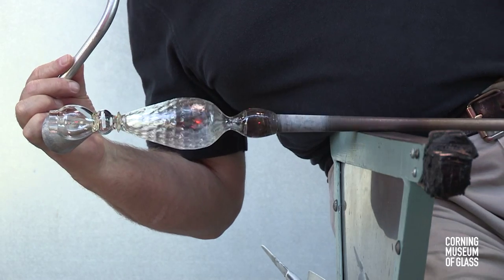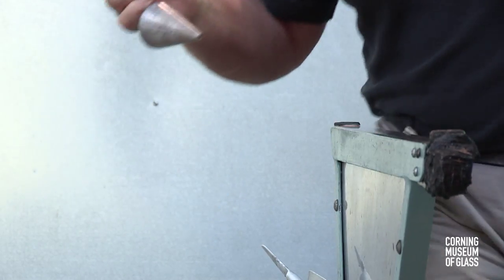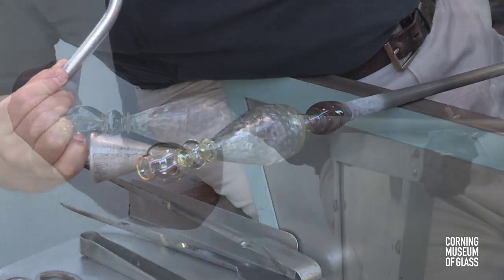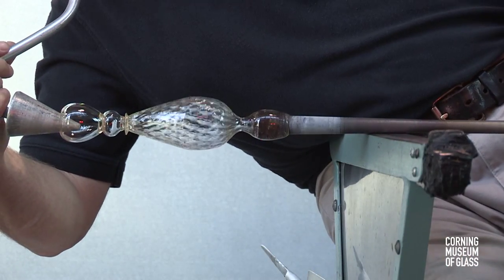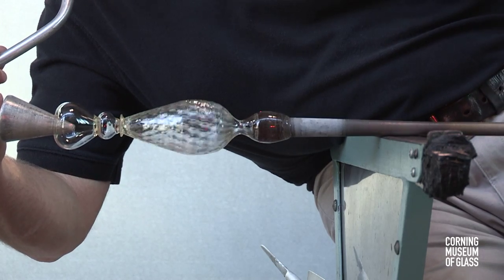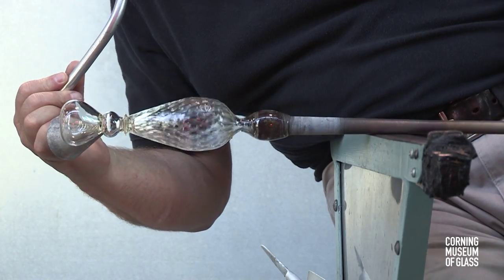The knop is cooled with the soffietta. It unavoidably becomes softened during the reheat for the foot, and the soffietta is used to enlarge and reshape the foot bubble.